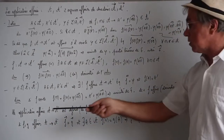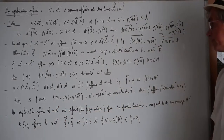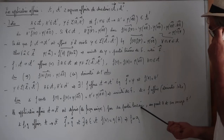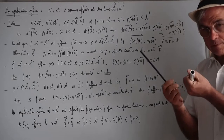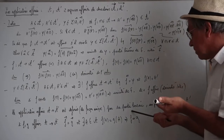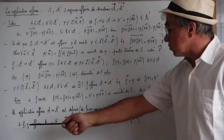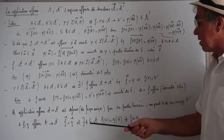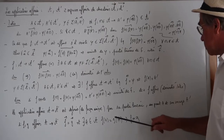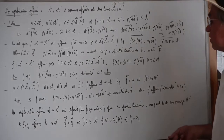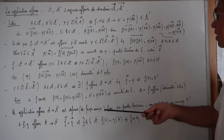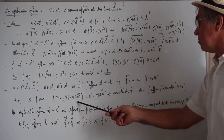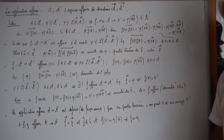De ce résultat, il découle qu'une application affine de A vers A' est parfaitement définie de façon unique quand on se donne un point et son image et une partie linéaire, c'est-à-dire une application linéaire. Elle est parfaitement définie par l'image d'un point et sa partie linéaire. Donc si F et G sont affines, et si la partie linéaire de F est égale à celle de G et qu'il existe un point A tel que F(A) = G(A), alors F = G.